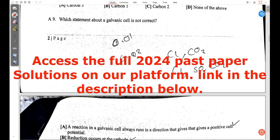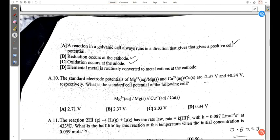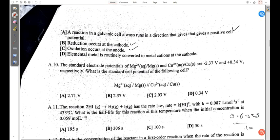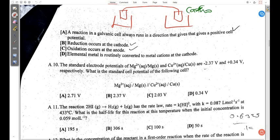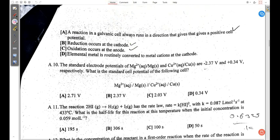Question nine: which statement about a galvanic cell is not correct? A reaction in a galvanic cell always runs in the direction that gives a positive cell potential - that's true. Galvanic cell is something that appears like this. This is coming from electrochemistry - check on our site or even on our YouTube channel, there's a video on galvanic cell. Reduction occurs at the cathode - that's true. So the cathode is usually written on the right and then on the left we put the anode, that's where oxidation occurs. Elemental metal is routinely converted to metal cations at the cathode - no. So the first three are things that we are sure of, and so D would be the answer for the incorrect statement.